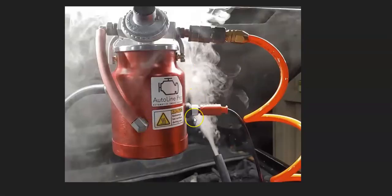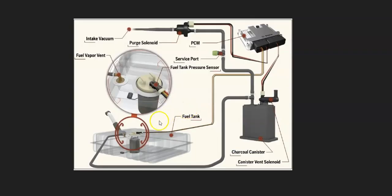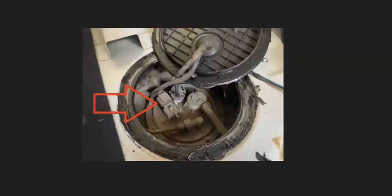If you took it to a mechanic, they would use a smoke machine — they'd feed smoke into the EVAP system and wherever the smoke came out they'd know where the leak is. There are some low-cost smoke machines on Amazon or eBay, and you can even make one yourself for about five to ten dollars — there are YouTube videos on how to do that. So go look for any hoses that might be leaking, and possibly even the charcoal canister itself.